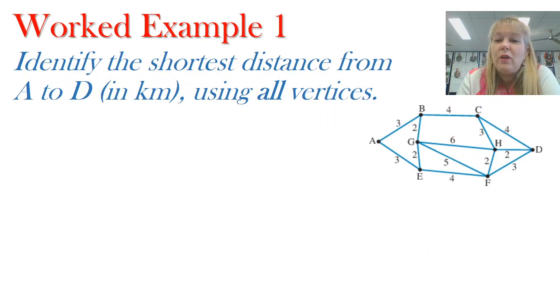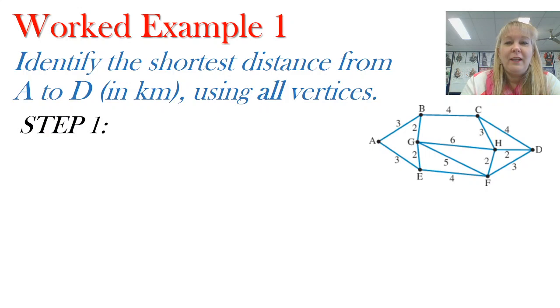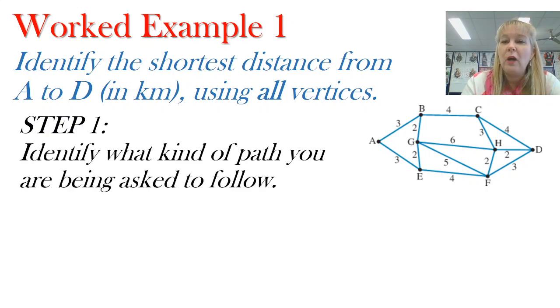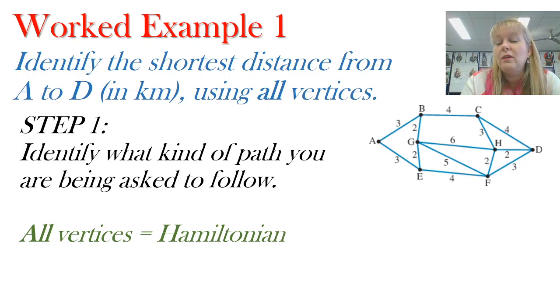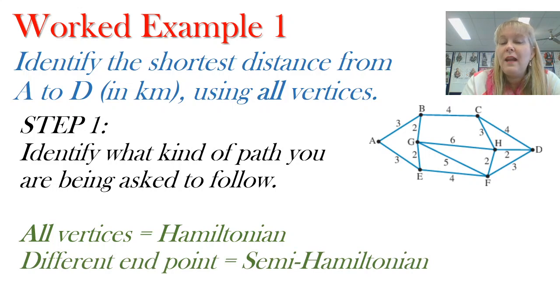In my first worked example, I've got a fairly complex looking network over here on the right. I want to get from point A, which is one side of the network, all the way over to point D, and I need to use every vertex. An example in real life might be if I was delivering parcels for Australia Post. I would want to make sure I visited every home, but I would want to take the route that was the shortest number of kilometers. Step one is I need to work out what kind of path I'm being asked to follow. In this case, it's going to be Hamiltonian because I'm visiting every vertex. I'm looking at two different endpoints. So it's semi-Hamiltonian, and knowing that helps me understand the kind of rules I'm going to follow.